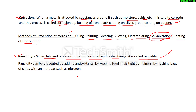Rancidity is due to the reaction of oils and fats with oxygen. If we cut this contact — that is, if oxygen does not reach the food item — we can prevent rancidity. It can be prevented by adding antioxidants, which react with oxygen and prevent oxidation of food items, and by keeping food in airtight containers so oxygen cannot reach the food.